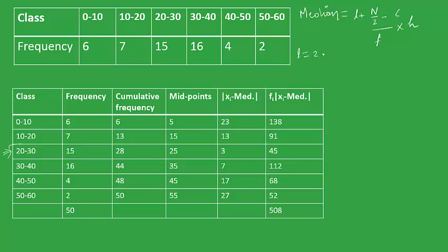We have l equals 20. Here, c is the cumulative frequency of the previous interval, which is 20. f is the frequency of this interval, which is 15, and h is the width of this particular interval, which is 10. After plugging in these values, we'll have 20 plus (25 minus 3) upon 15 into 10.